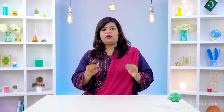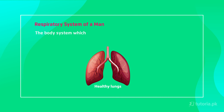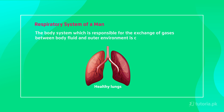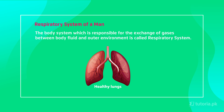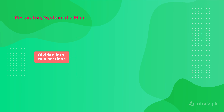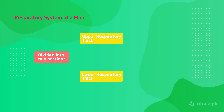The process of respiration involves a special system that we call the respiratory system. The body system responsible for the exchange of gases between body fluids and the outer environment is called the respiratory system. The respiratory system is divided into two sections: the upper respiratory tract and the lower respiratory tract.